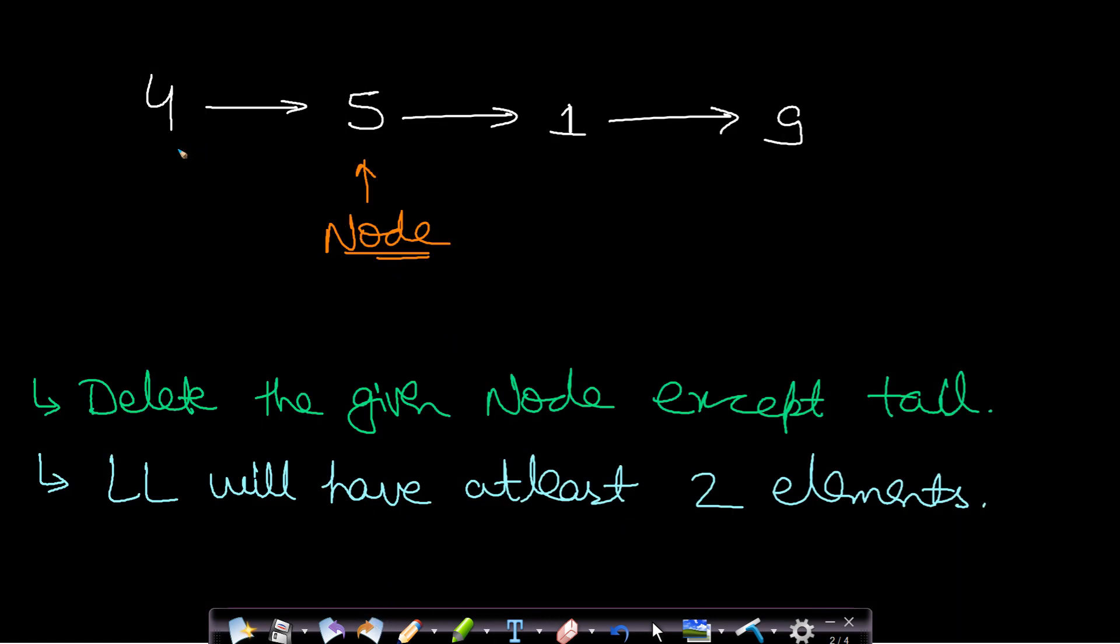The problem says that we are given a linked list and we are given just a single node in the linked list, and we want to delete this current node. We are not given the head of the linked list, we are just given this single node. You can see that if you remove this current node 5, then your linked list will become 4, 1, and 9.